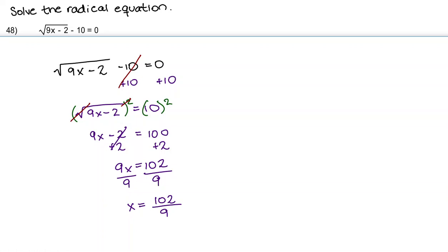We can simplify this further, because 102 and 9 are both divisible by 3. So we're going to divide by 3, and that gives us 34 over 3. Our answer is x equals 34 over 3.